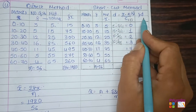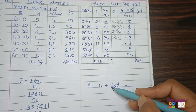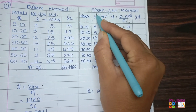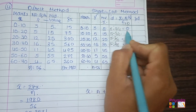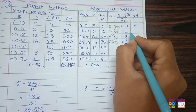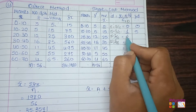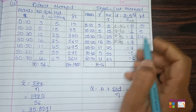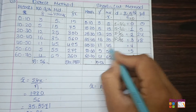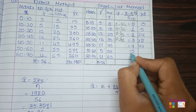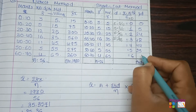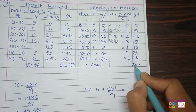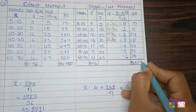Now, as the formula requires σfd, the fd column is found by multiplying frequency and d. The total of the fd column, which is σfd, is 170.